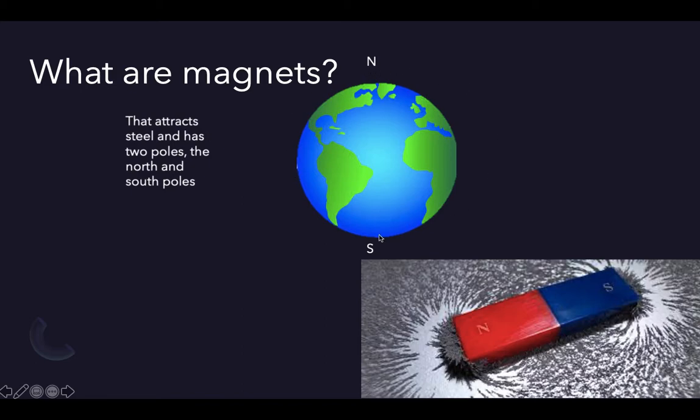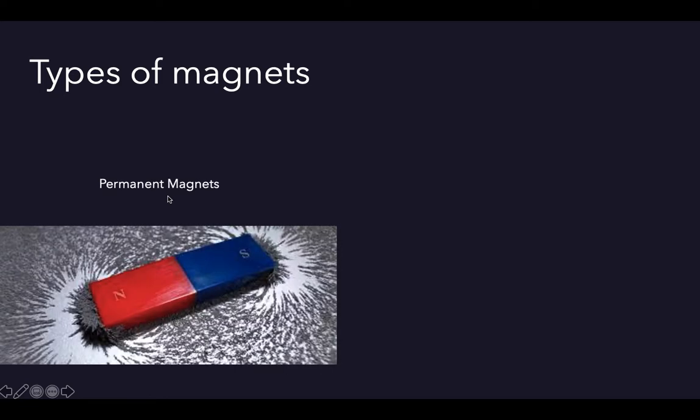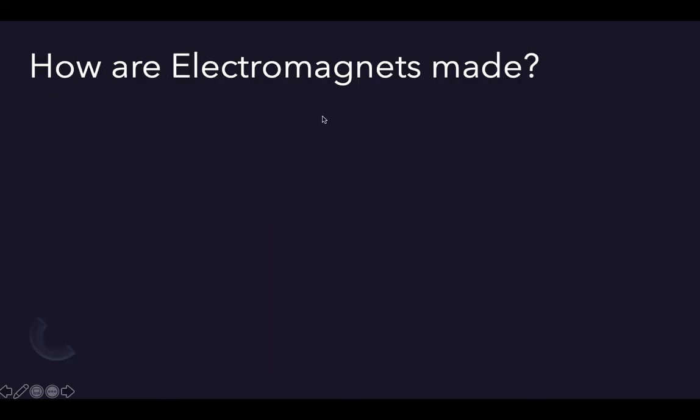North attracts south and north repels north, so they attract and repel. We'll be talking about two types of magnets in this video: permanent magnets and electromagnets.